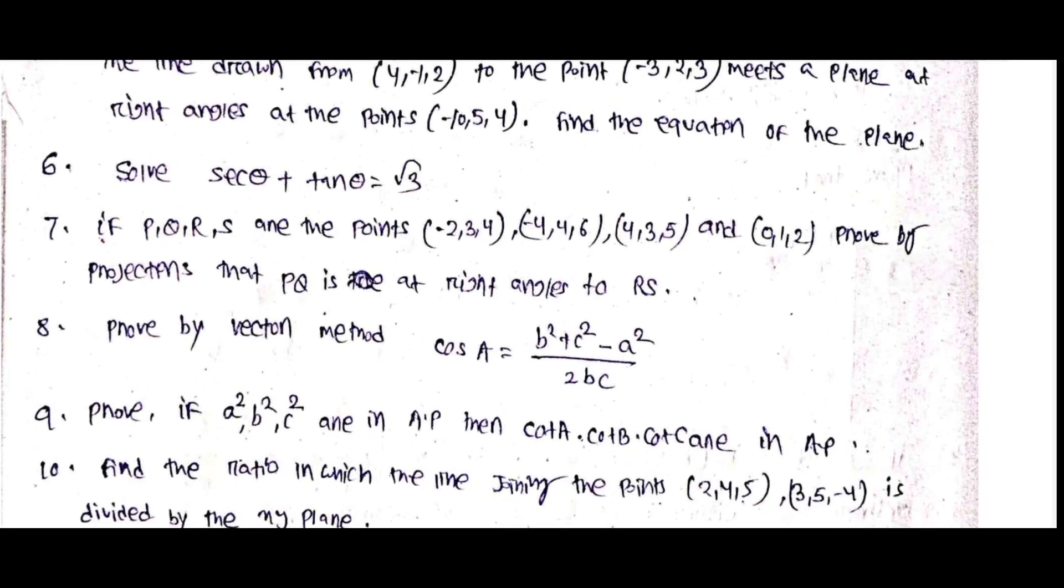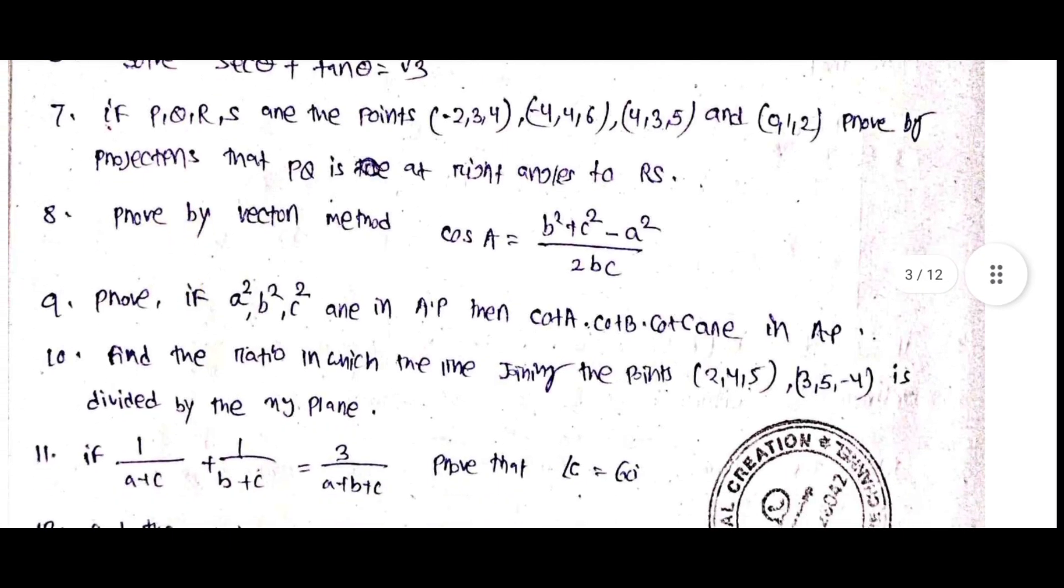Solve sec theta plus tan theta equal to root 3. If PQRS at the points minus 2, 3, 4, minus 4, 4, 6, 4, 3, 5, 9, 1, 2. Prove by projection that PQ is at right angle to RS.